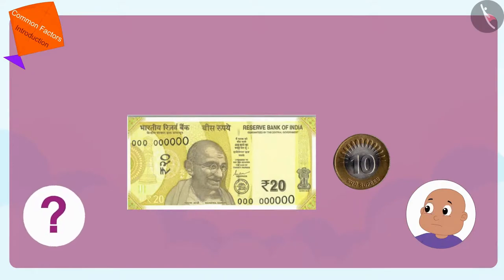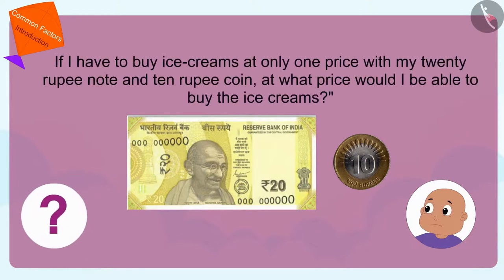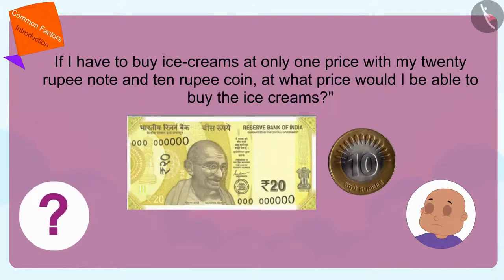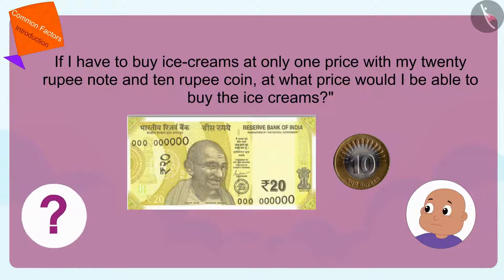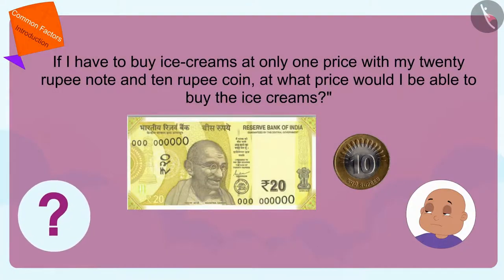Babloo is thinking, if I had to buy ice creams at only one price with my 20 rupee note and 10 rupee coin, at what price would I be able to buy the ice cream? Children, can you tell me how Babloo can find the answer to this question?